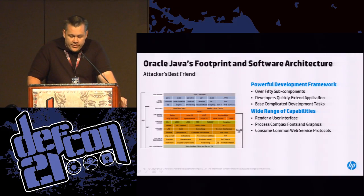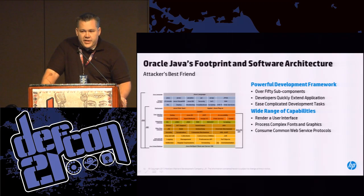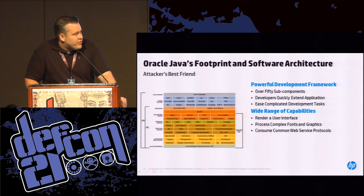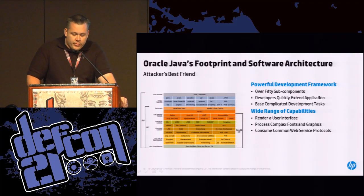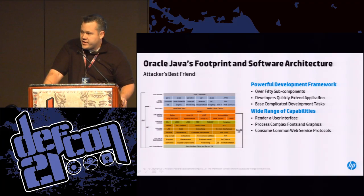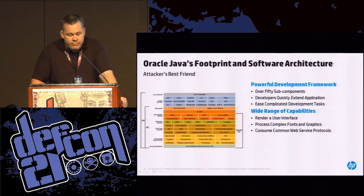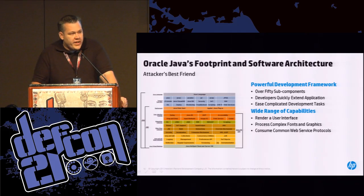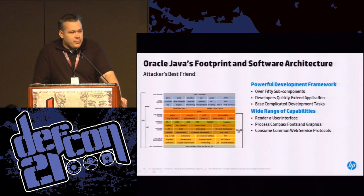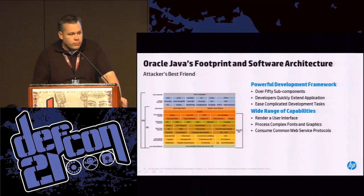If we look at the architecture itself — it's on the slide right here — there are over 50 subcomponents and that's what we're focusing on: what are the most vulnerable pieces of this architecture. The deployment subcomponent consists of the Java Web Start and applet capabilities. Java FX is a set of APIs for creating and delivering rich Internet applications. Java 2D produces 2D graphics and the library subcomponent — the actual lang and util components — provide the basic functionality for almost every application. It allows developers to quickly implement complicated tasks — write once, run everywhere.